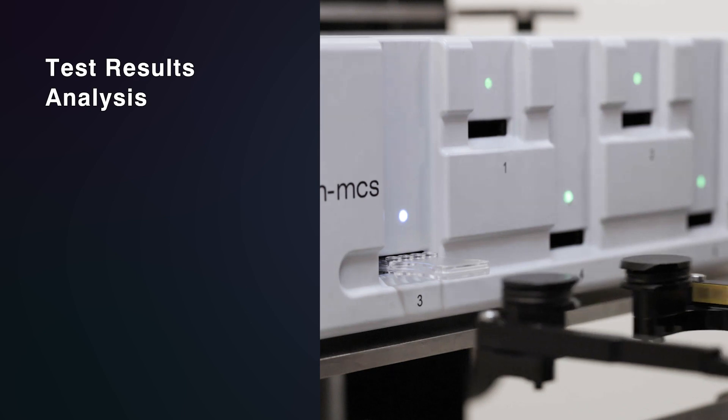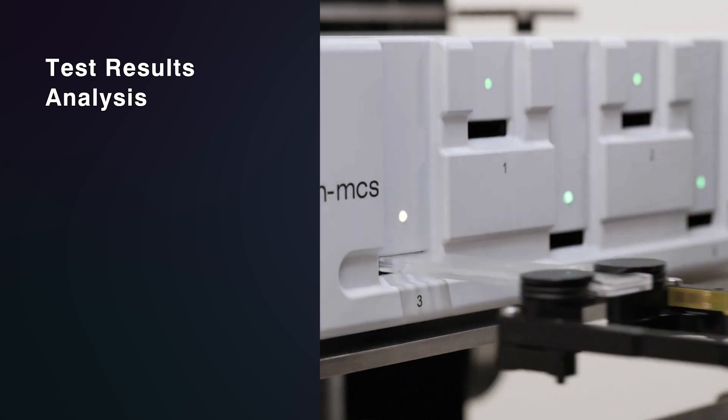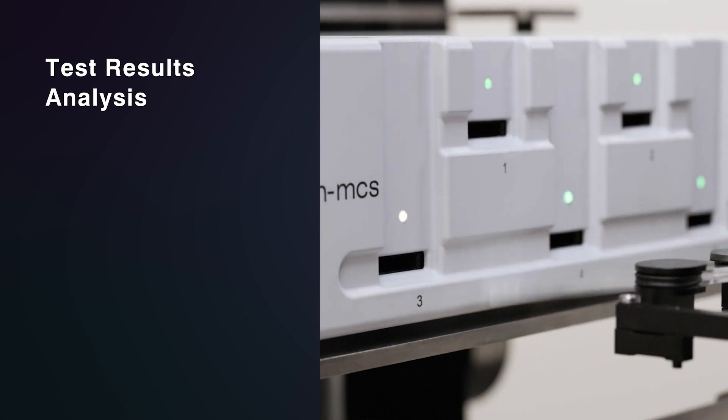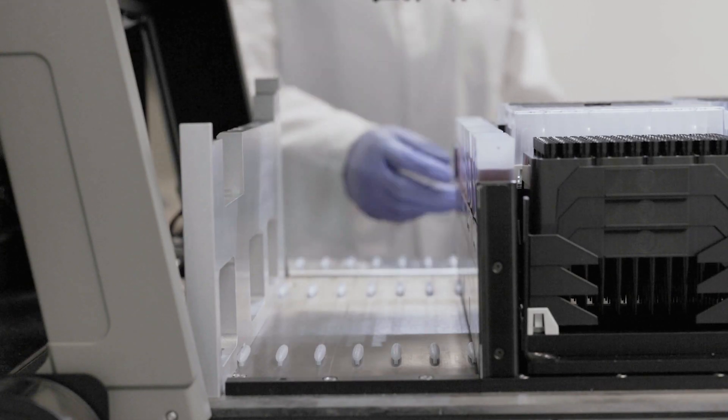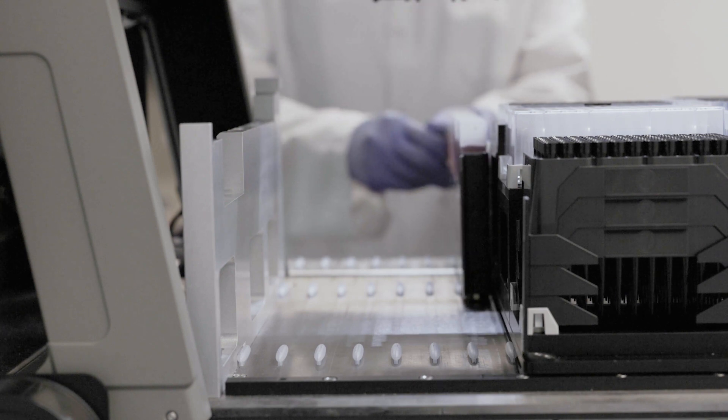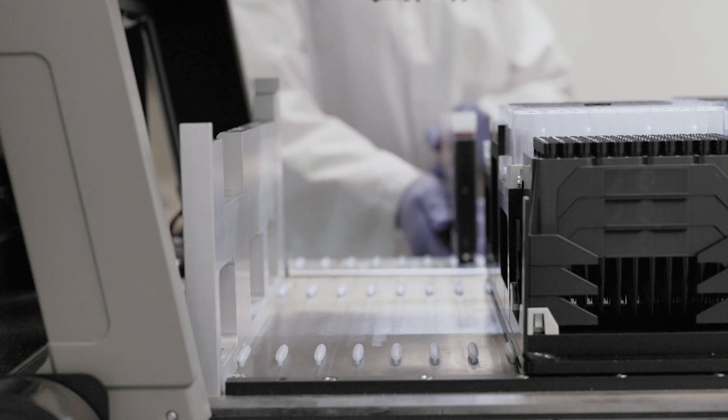When the Nexus 200 has completed testing all the samples, it will remove any remaining cartridges from the NextGen MCS and place them in the waste bin and unlock the door. The user can then safely empty the waste bin and retrieve and discard any accessories that were used during the run.